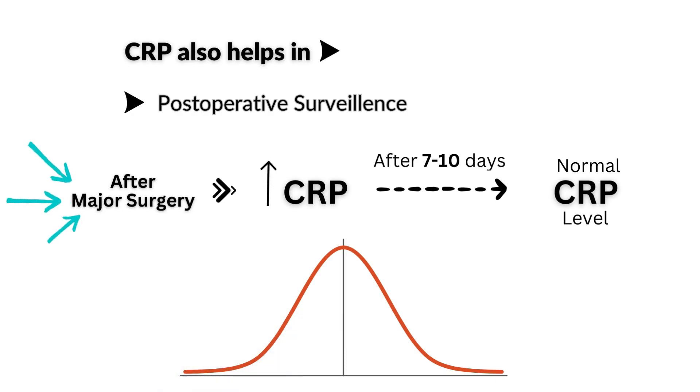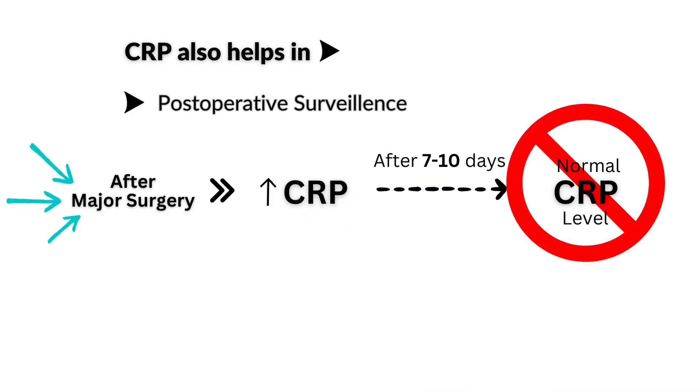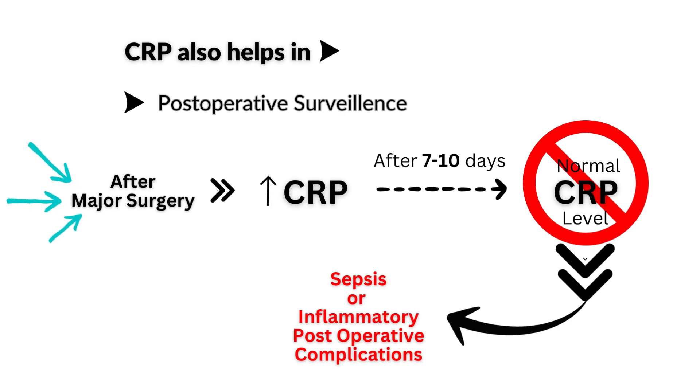CRP levels invariably rise after major surgery but fall to normal within 7 to 10 days. Absence of this fall is indicative of possible septic or inflammatory postoperative complications.